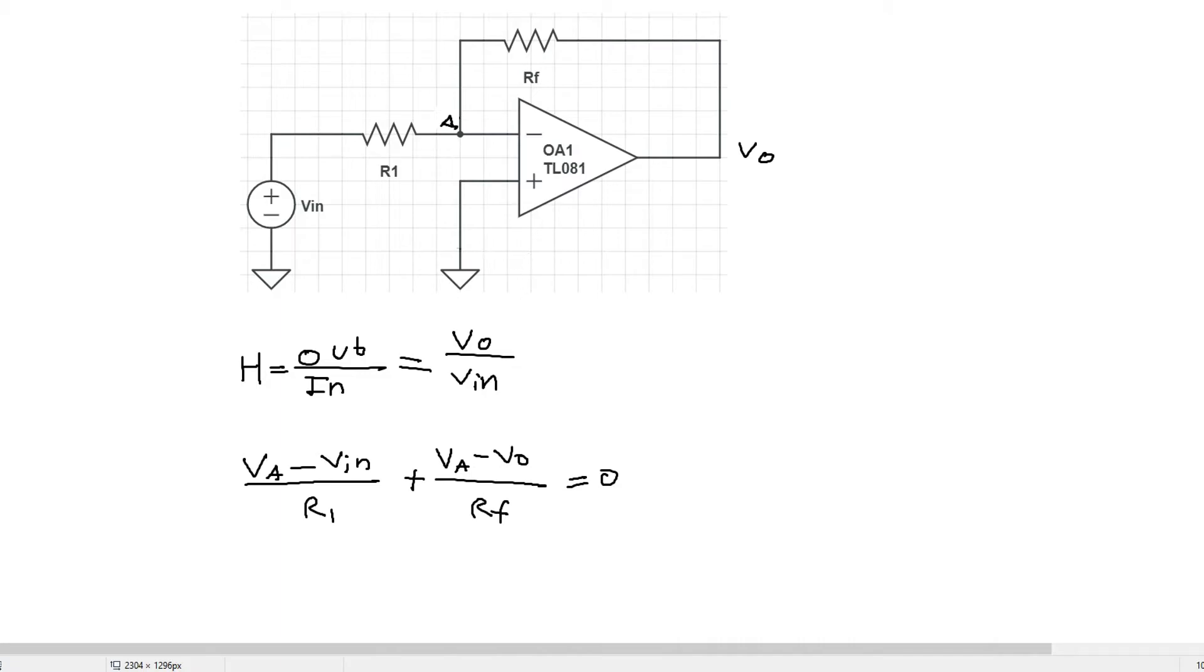Now what we have to realize is because this is an operational amplifier and because there is negative feedback, the voltage at the non-inverting input is the same as the voltage at the inverting input. And because the voltage here, let's call this B, is zero, that makes the voltage at point A also zero because they have to be the same voltage. And this is known as a virtual short between the two terminals.